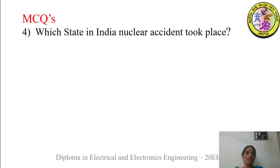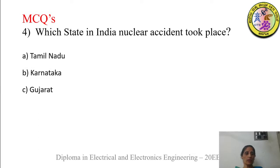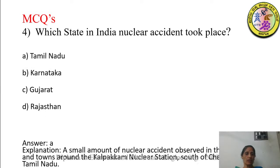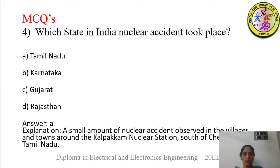Next MCQ: in which state of India did a nuclear accident take place — Tamil Nadu, Karnataka, Gujarat, or Rajasthan? This is a general knowledge question. The answer is Tamil Nadu, where a small nuclear accident was observed in villages and towns around the Kalpakkam nuclear station, south of Chennai in Tamil Nadu. So there is a nuclear power plant at Kalpakkam where one accident occurred.